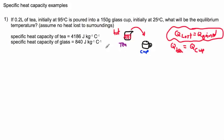For Q of the T, we have to remember the equation for specific heat capacity: Q equals M C delta T, where M is the mass, C is the specific heat capacity, and delta T is the change in temperature.